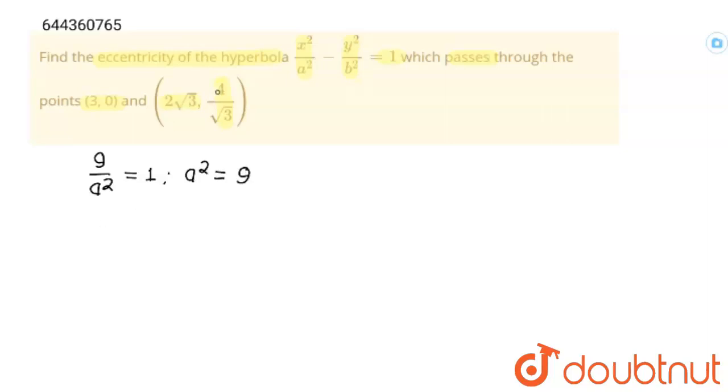Now I am going to put (2√3, 4/√3) at place of x and y. 2√3 squared will be 12/9 minus 4/√3 squared, this will be 16/(3b²) = 1.